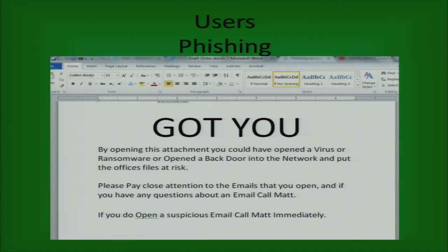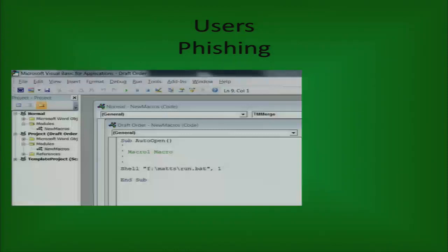Three Christmases ago, one of my secretaries opened a supposed resume that was a .docm file and caused a ransomware attack that encrypted about two gigabytes of data. This is what the macro does: it's an auto-open macro in Word, so as soon as they open the Word document, the macro executes. Because of the way my network is set up, we had a hard time finding tracking software that could tell us who opened the email and who didn't.